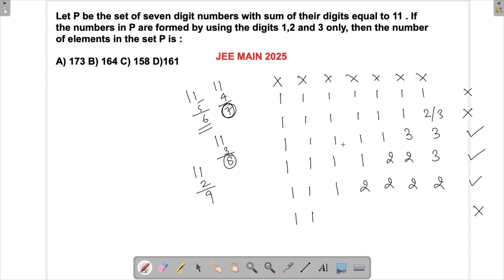For case one with five ones and two threes: 7! divided by 5! times 2!. This gives me 7 times 6 times 5! divided by 5! times 2, which equals 21.